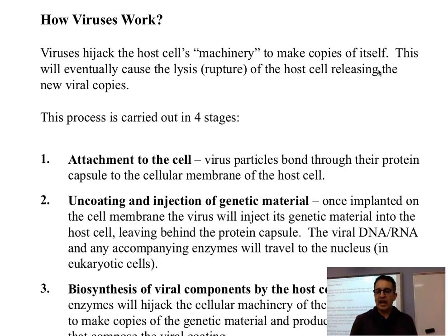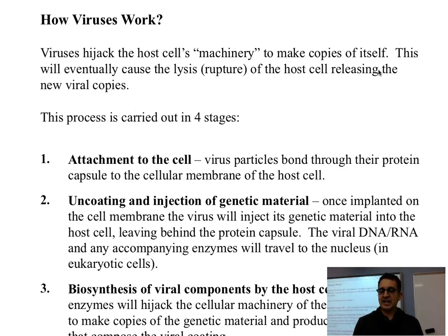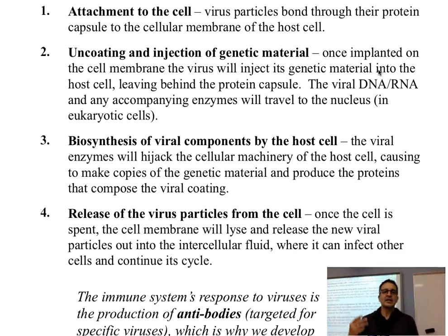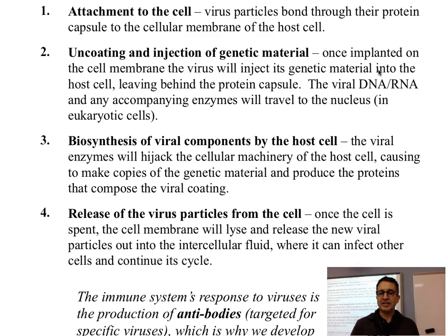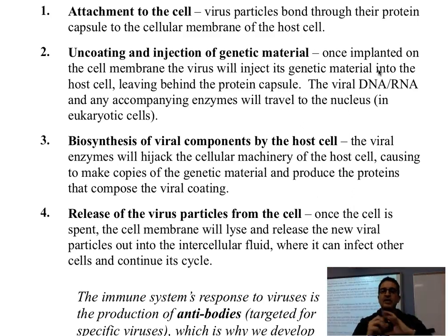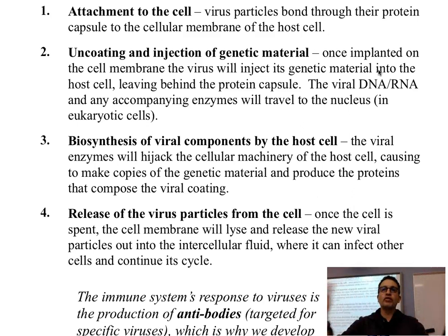That genetic material, together with any enzymes that may be present inside the protein coat, will travel to the host cell's nucleus where they will hijack the genetic machinery of the cell. It will start synthesizing copies of itself — copies of the genetic material — and also tell the machinery of the host cell to make protein coats so new virus particles can be assembled. Once the host cell has put together the genetic material within that coat, the last stage causes the cell membrane to lyse, break, and release all of these new viral particles.